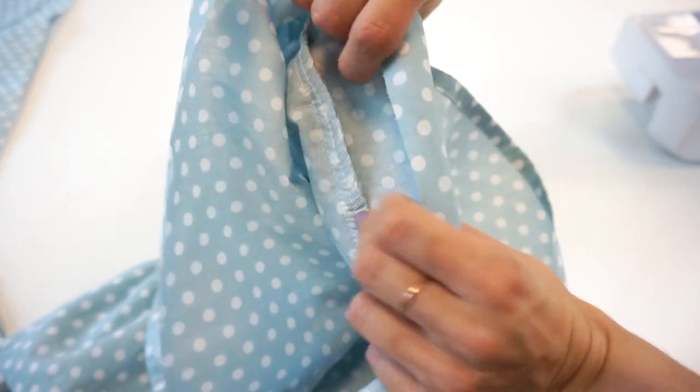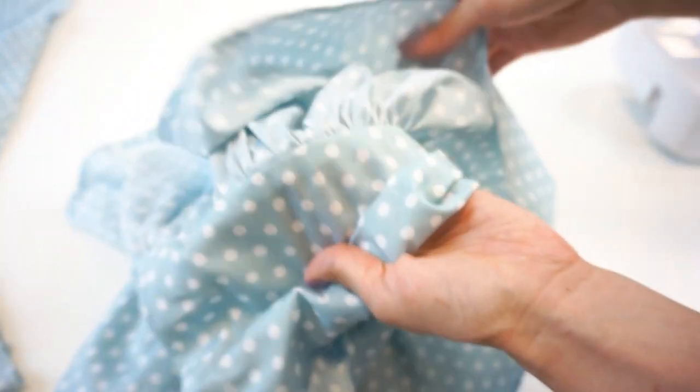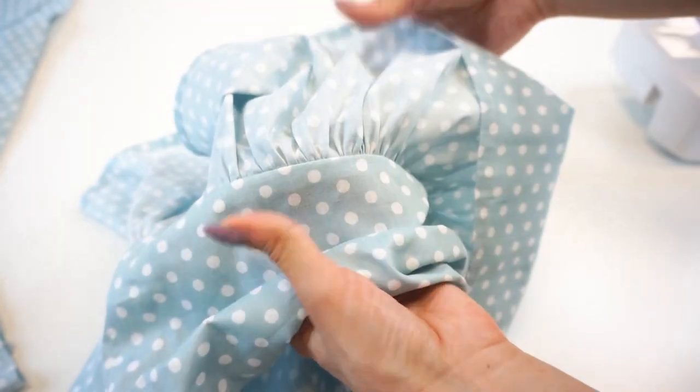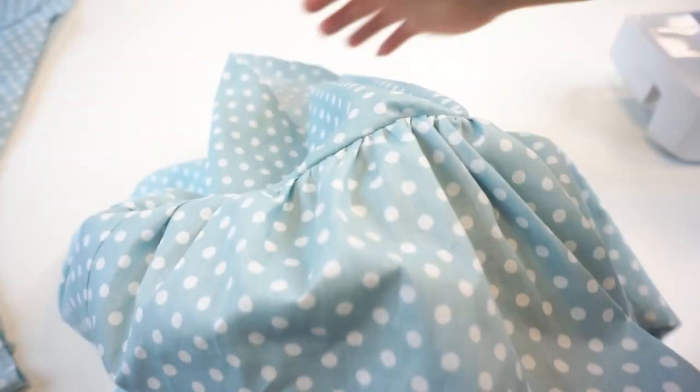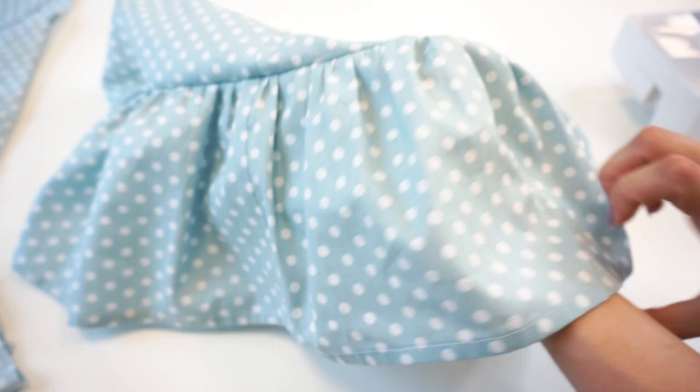If you choose the second option the topstitching seam will not be visible because it will be hidden under the frill and it will also make the frill look more fluffy.